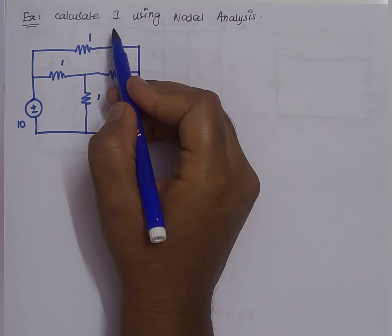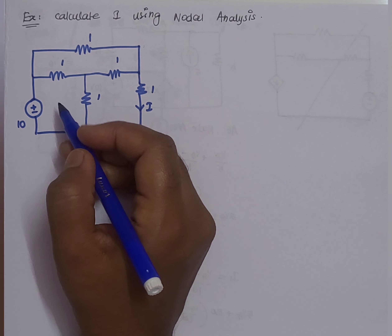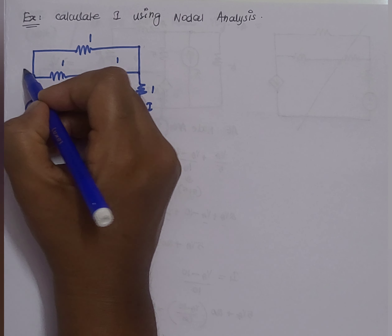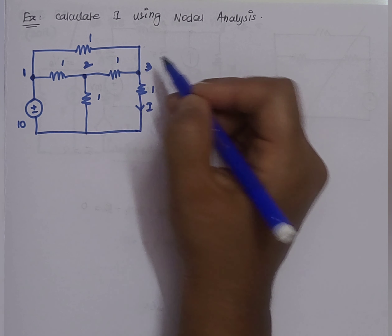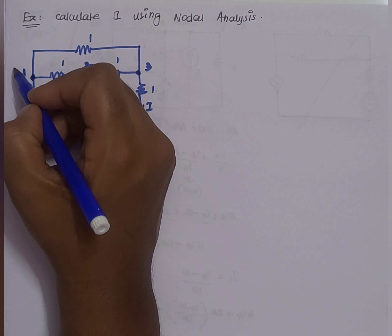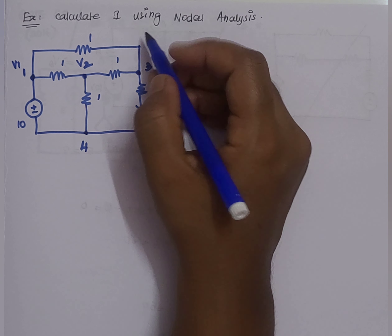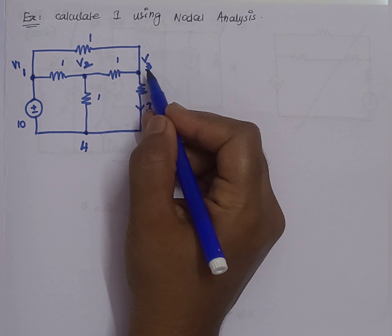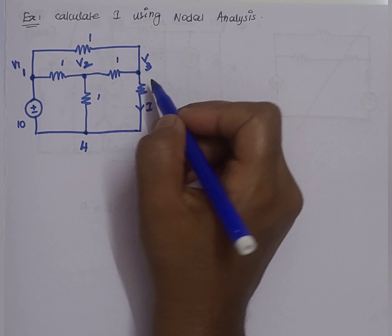The next question asks to calculate the current value using nodal analysis. First, we find the nodes in the circuit: node 1, node 2, node 3, and the reference node 4. At each node we assign voltages V1, V2, and V3 respectively.